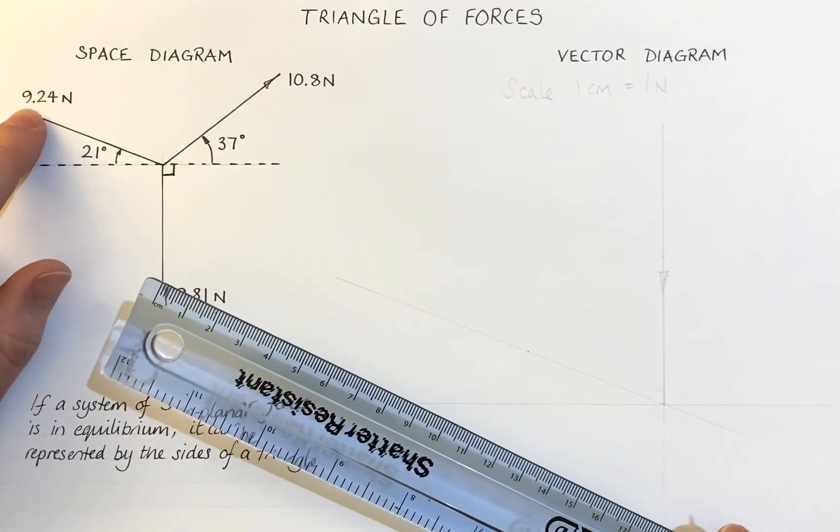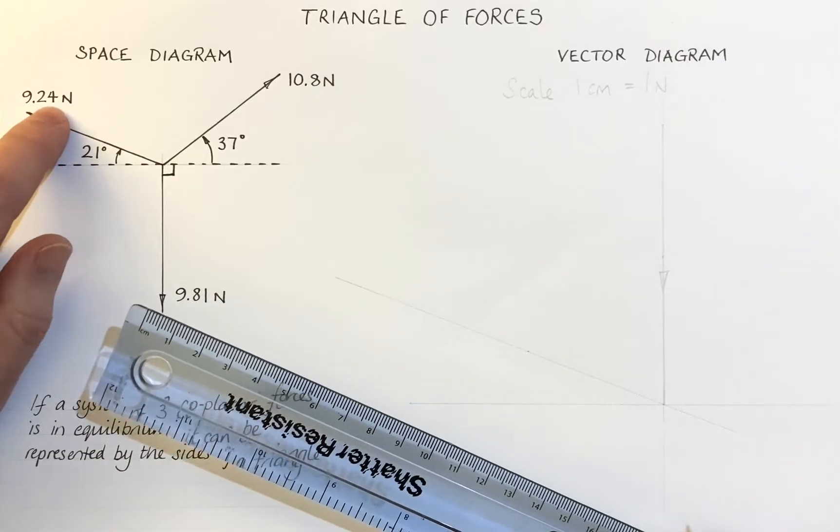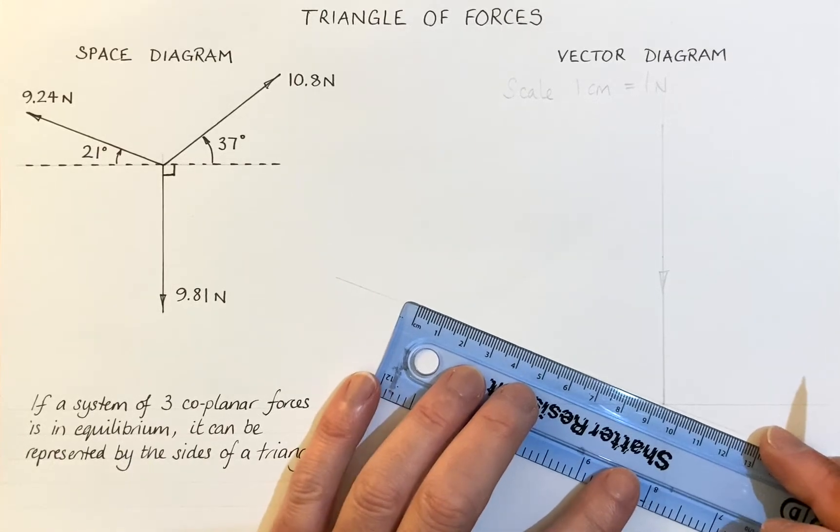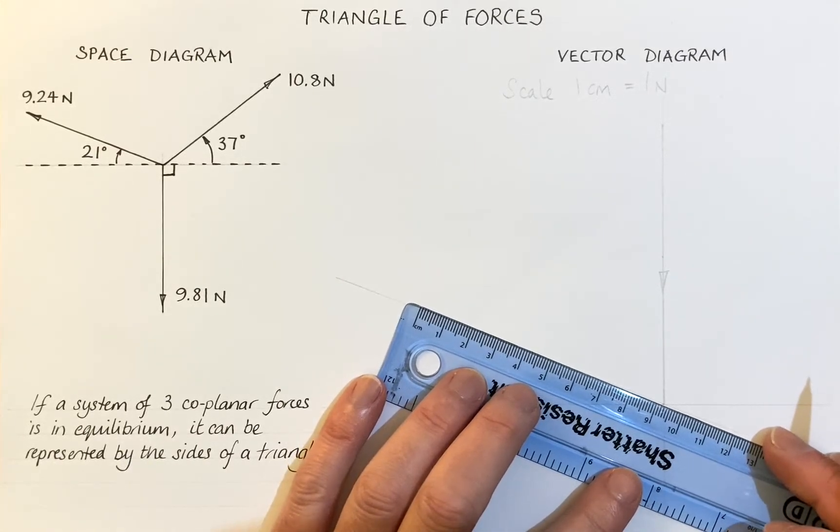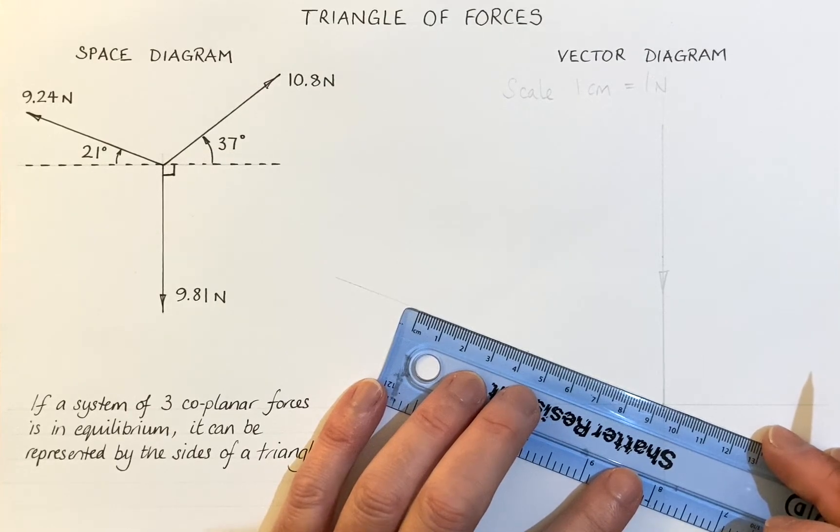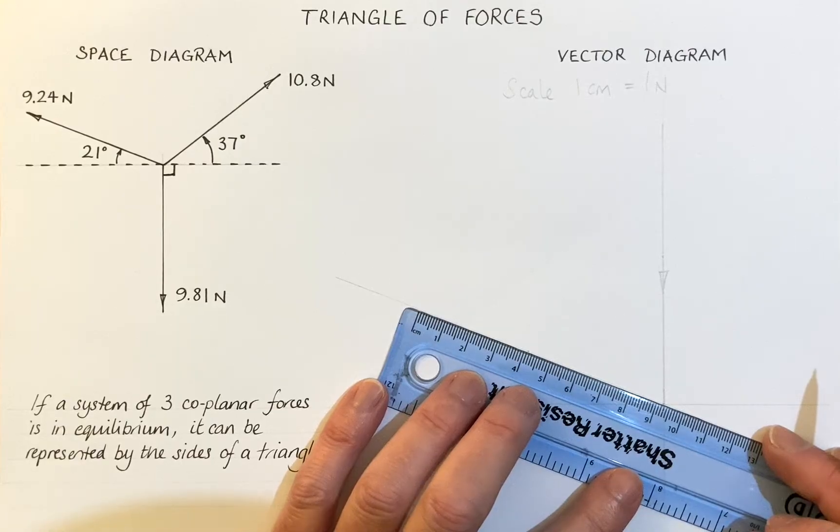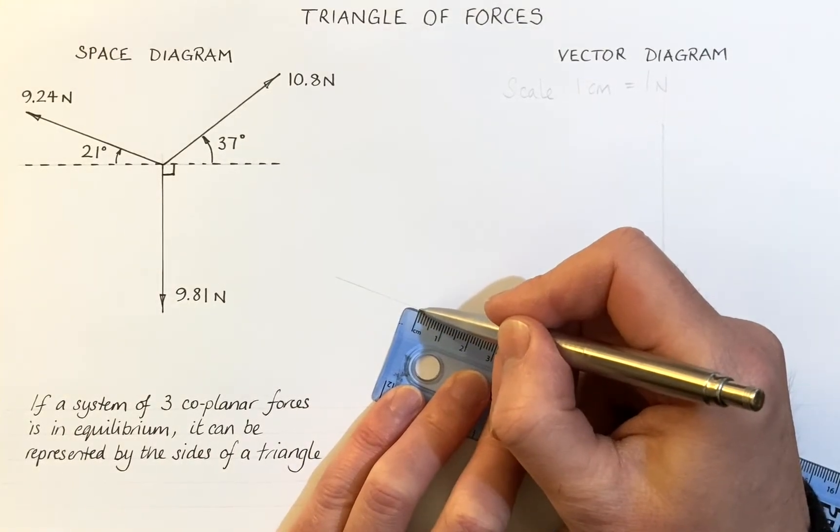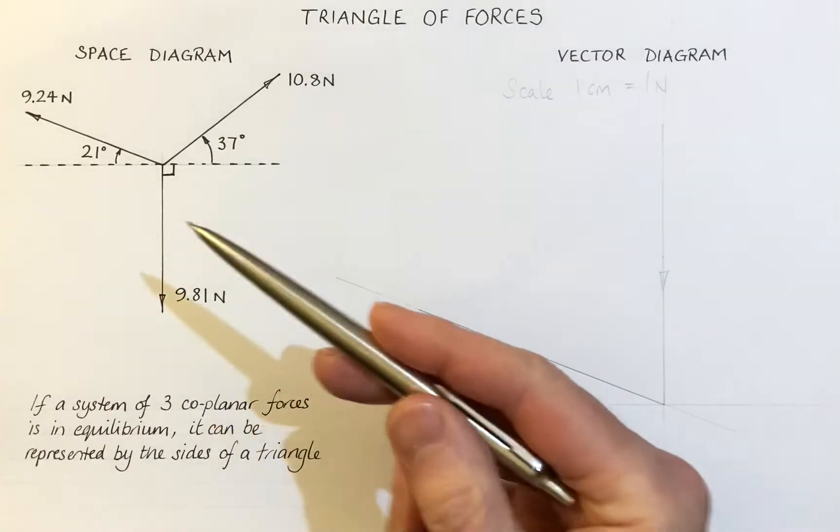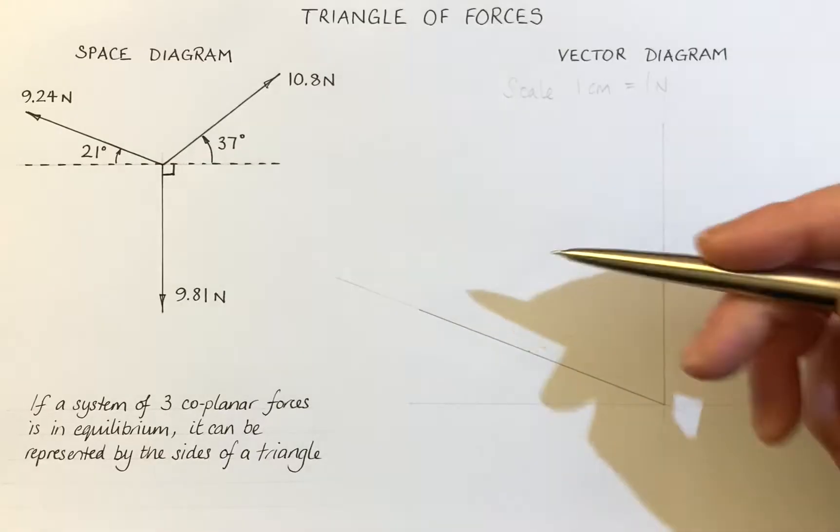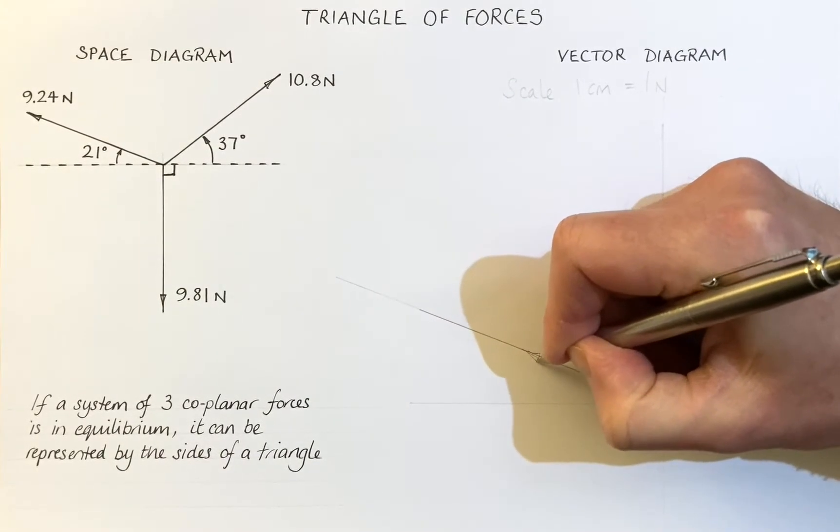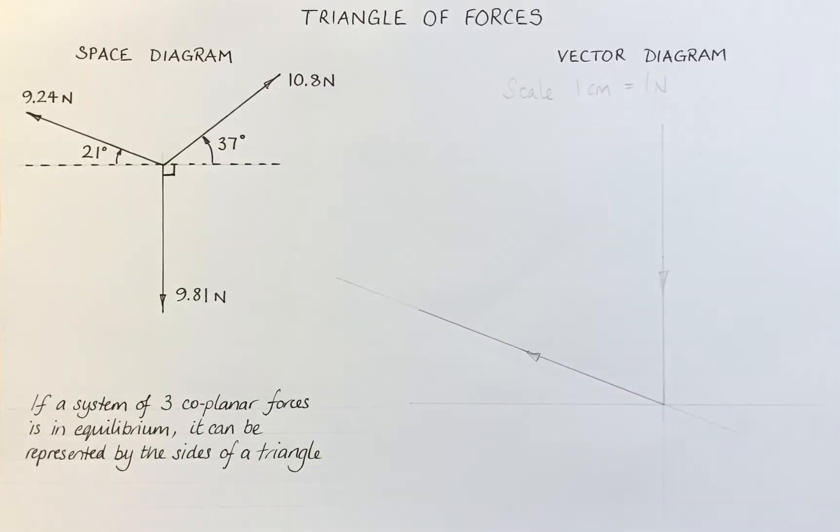Now, the magnitude of this vector is 9.24 newtons. And because our scale is one centimeter to one newton, I'm going to measure 9.24, roughly halfway between those two marks there. Here we go. From the end there. There's our second vector and that's acting in that direction. So again, I'm going to show the direction here with an arrow. I've placed it in the middle. You can place it on the end if you like.